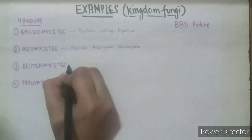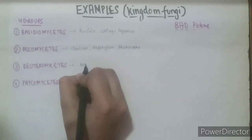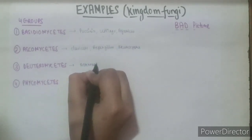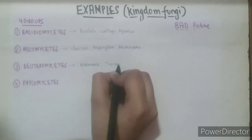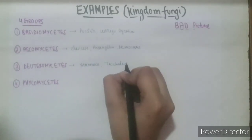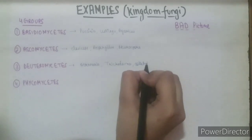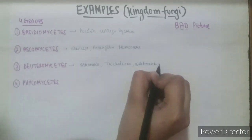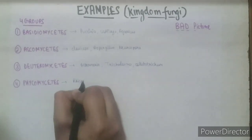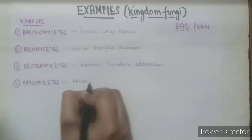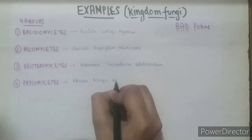Wait for the tricks. Examples of Deuteromycetes are Alternaria, Trichoderma, and Colletotrichum. Examples of Phycomycetes are Rhizopus, Albugo, and Mucor.